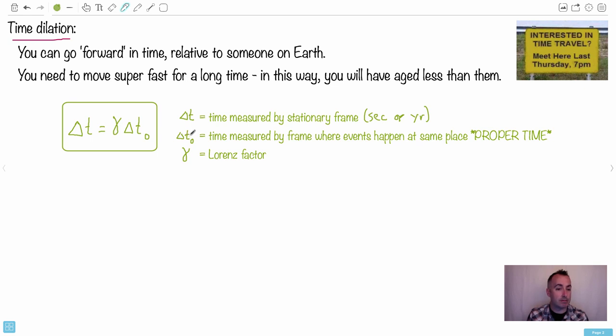Now delta T zero, notice a little subscript zero here. That's a time measured by a frame where the events happen in the same place. We call this the proper time. This is going to be a key word here we need to know about. So it's called proper time. That's this delta T zero here, proper time. So that's the key one here.